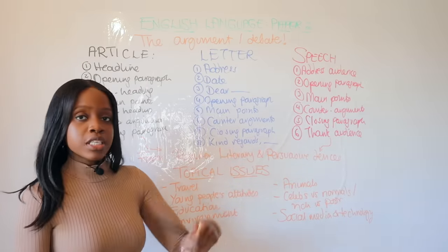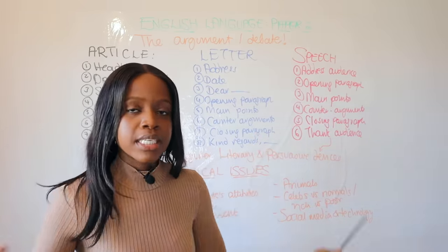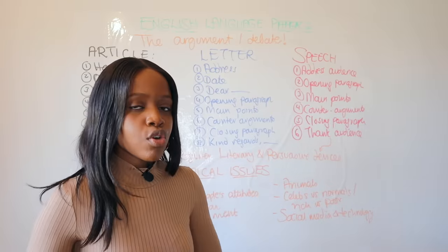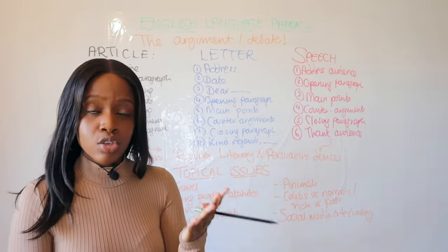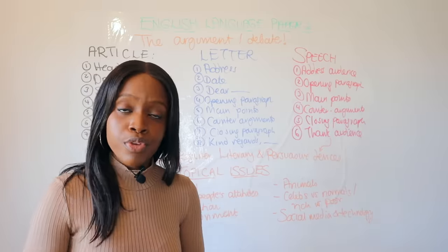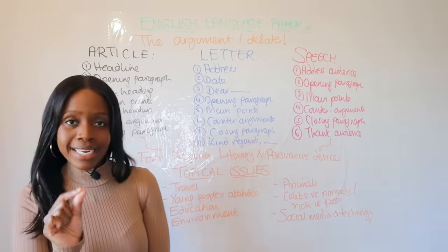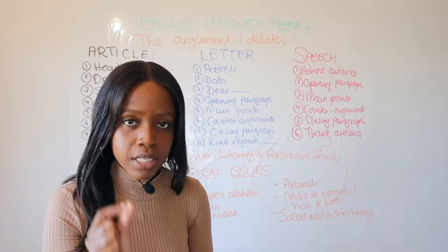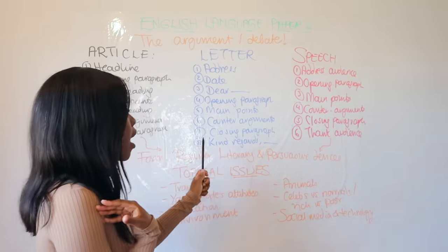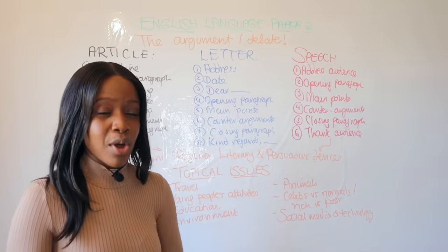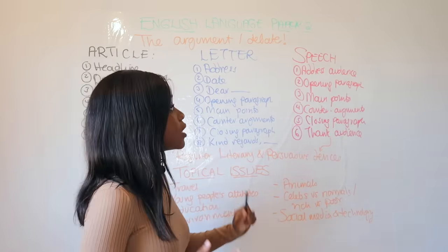Follow on with your main points — reasons one, two, and three why you believe you're correct — adding in your anecdotes, made-up statistics, and rhetorical questions. Then your counter-arguments to balance your discussion, showing why people would disagree with you, before finishing off with your closing paragraph. Then end your letter by signing off — either 'yours sincerely' or I personally like 'kind regards' because it's really easy to spell — followed by your name and surname. That's a letter.